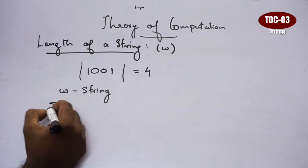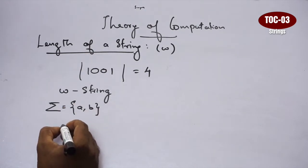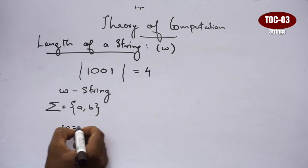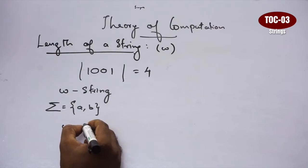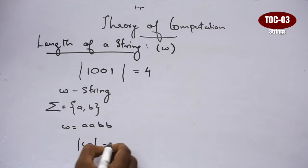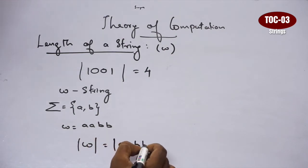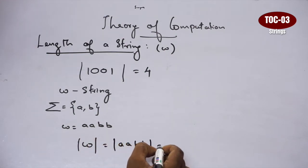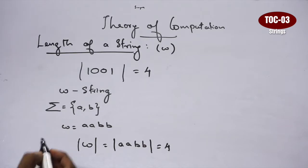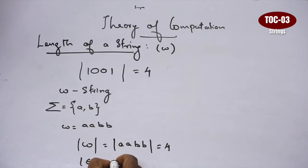Now we have an alphabet: {a, b}. If we look at a string, we can write it out. The length of this particular string is 1 to 4. If we look at epsilon, the string of length is 0, so the length of this particular string is 0.